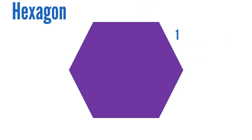Hello, Hexagon. How many sides do you have? One, two, three, four, five, six. The Hexagon has six sides.